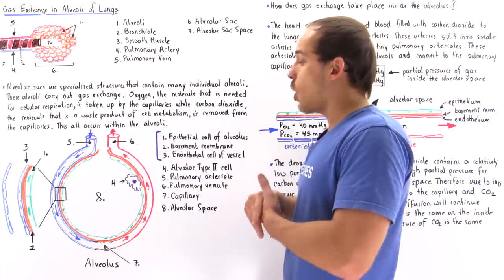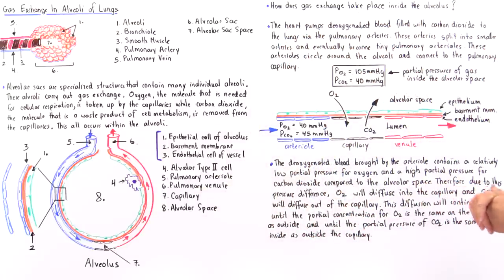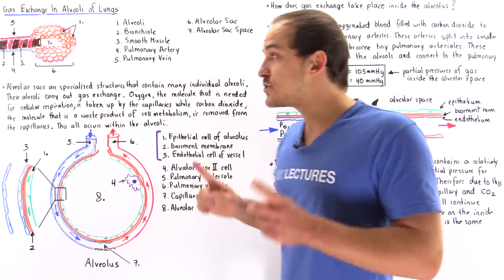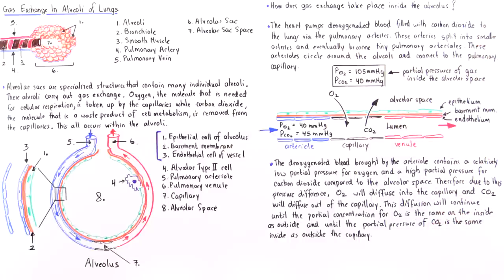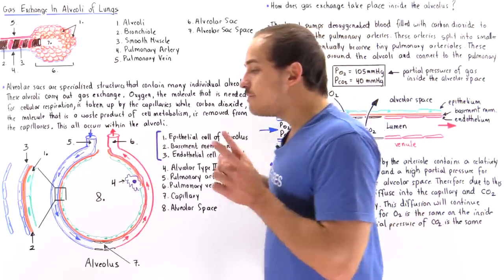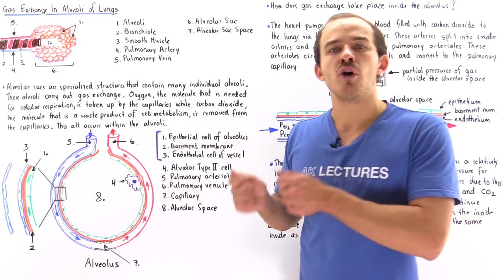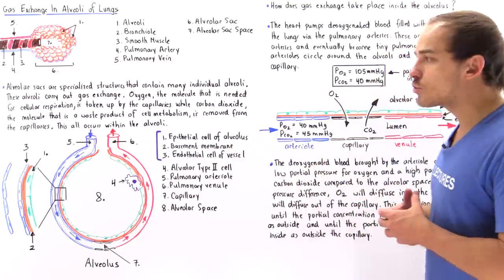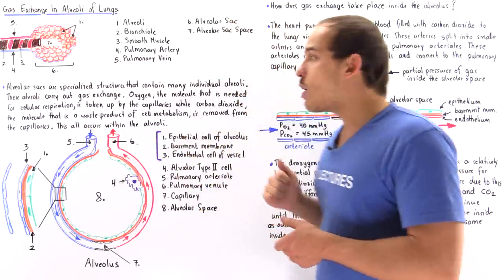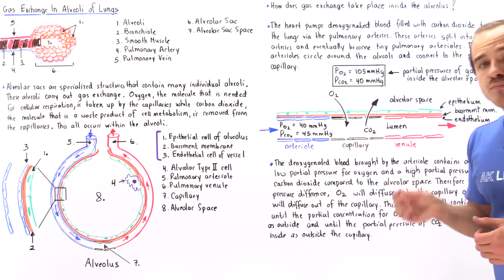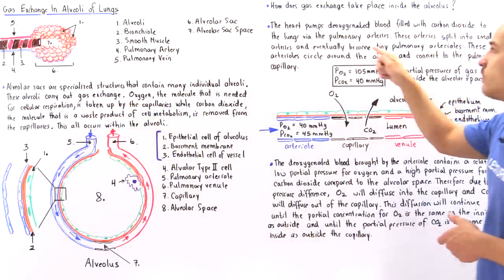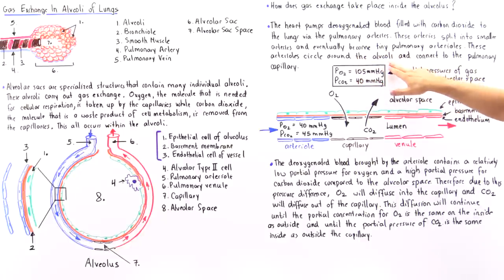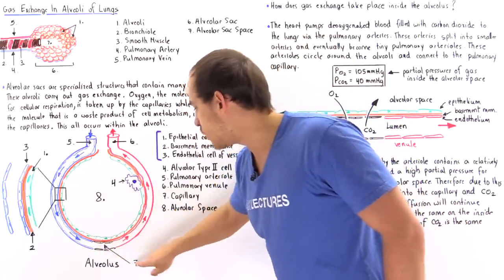Now that we know the structure of the alveolus, let's discuss how gas exchange actually takes place — why oxygen is taken up by the capillaries and carbon dioxide is released. The right ventricle of the heart pumps deoxygenated blood into the pulmonary trunk, which extends into the pulmonary arteries, bringing deoxygenated blood into the lungs. The pulmonary arteries divide into smaller arteries and ultimately into pulmonary arterioles (number five), which circle around the alveoli until they connect with the pulmonary capillary (number seven).